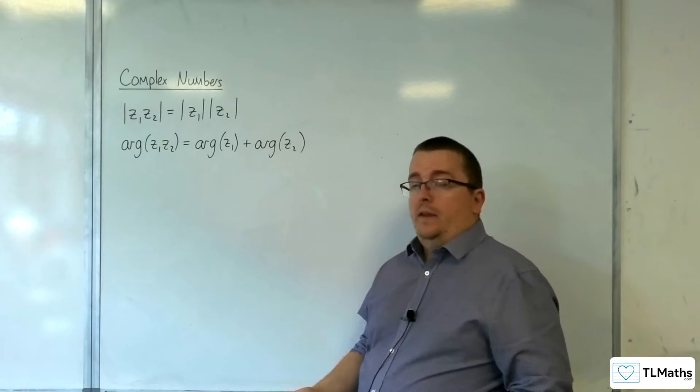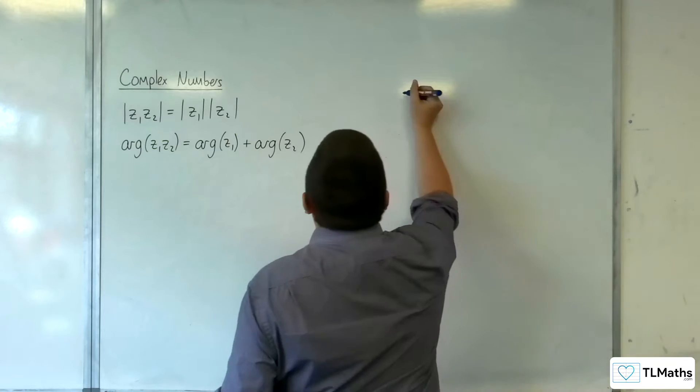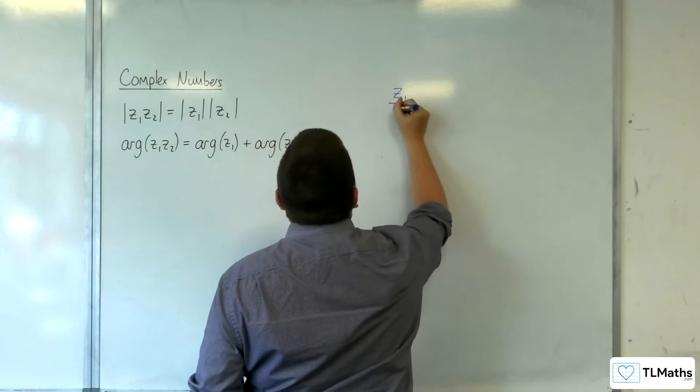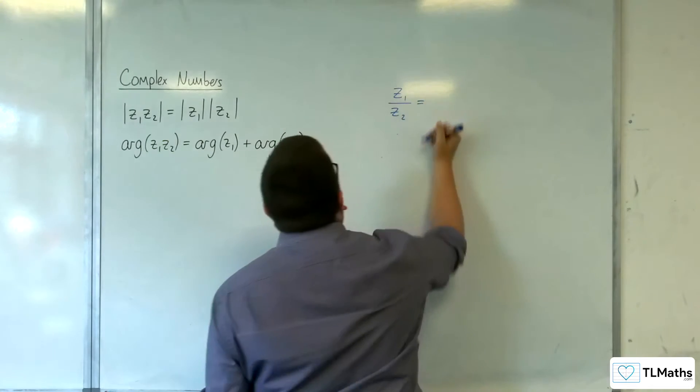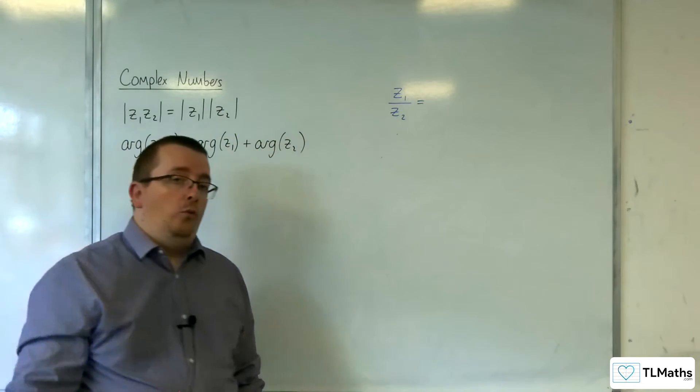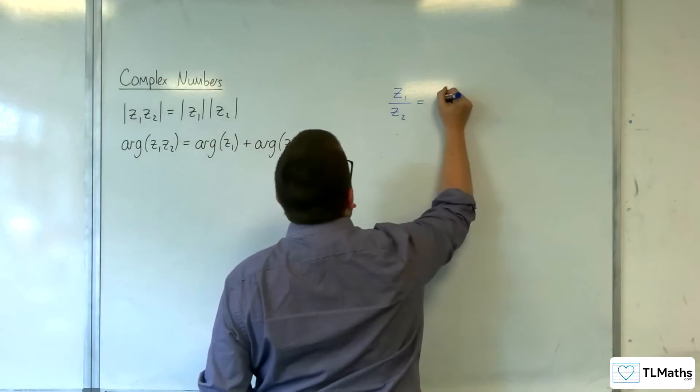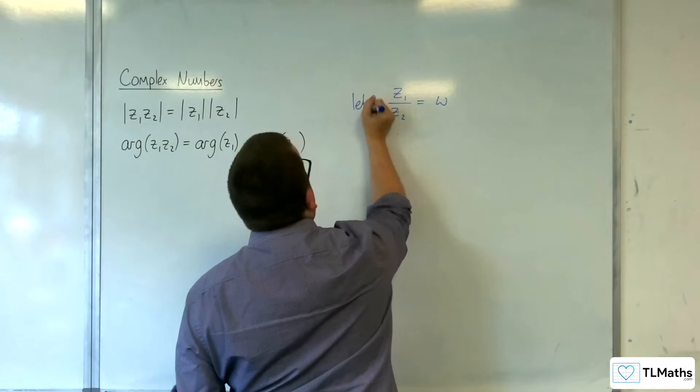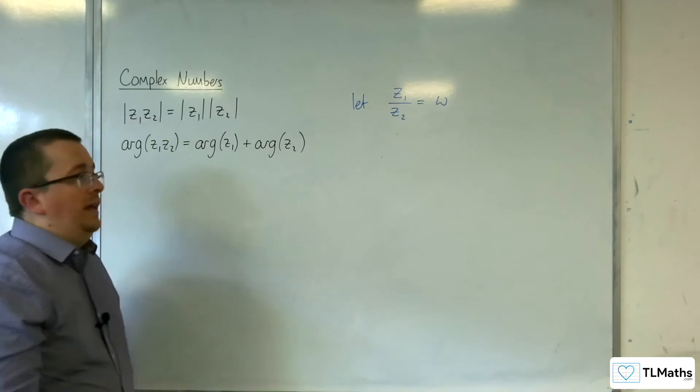So what we're going to do is we're going to look at Z1 over Z2. So one complex number divided by another. And I'm going to call that new complex number W. So we're going to let Z1 over Z2 be equal to W.